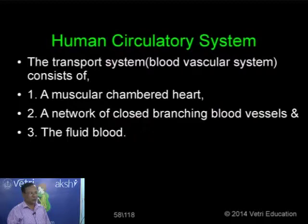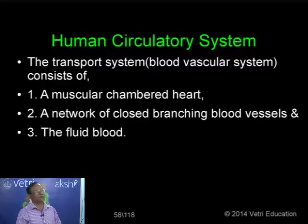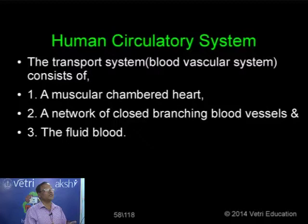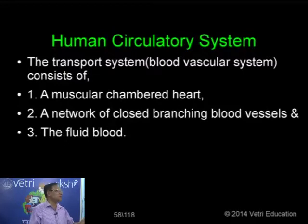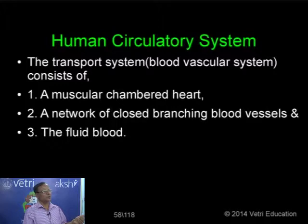In the case of all vertebrates, the circulatory system has three different components: one is the muscular chambered heart — the pumping organ and the busiest organ in the body; the second is a system of branched tubes called blood vessels; and the third is the fluid component — the blood — being transported by the blood vessels to different parts of the body. We will proceed about the human circulatory system in detail in the next class. Thank you, class is complete.